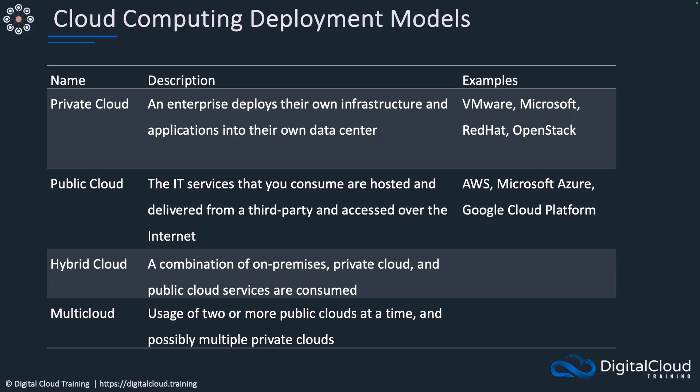Private cloud is where you're deploying the infrastructure in your own data center, and then you have the relevant software layers on top to make it a cloud service — things like metered billing as well as the service catalog. We can build these in a variety of ways. There are different vendors who offer the software layers to sit on top of the hardware, and they include VMware, Microsoft, Red Hat, and OpenStack.